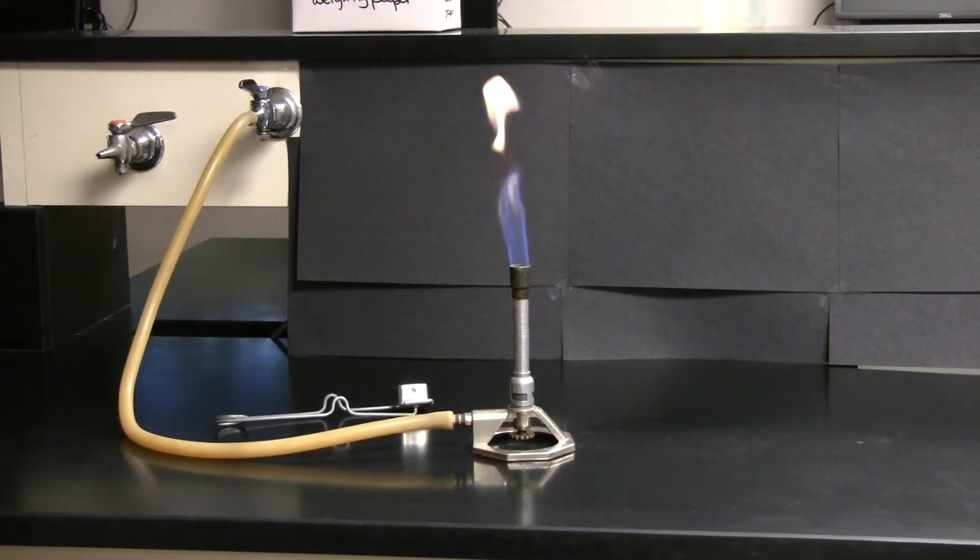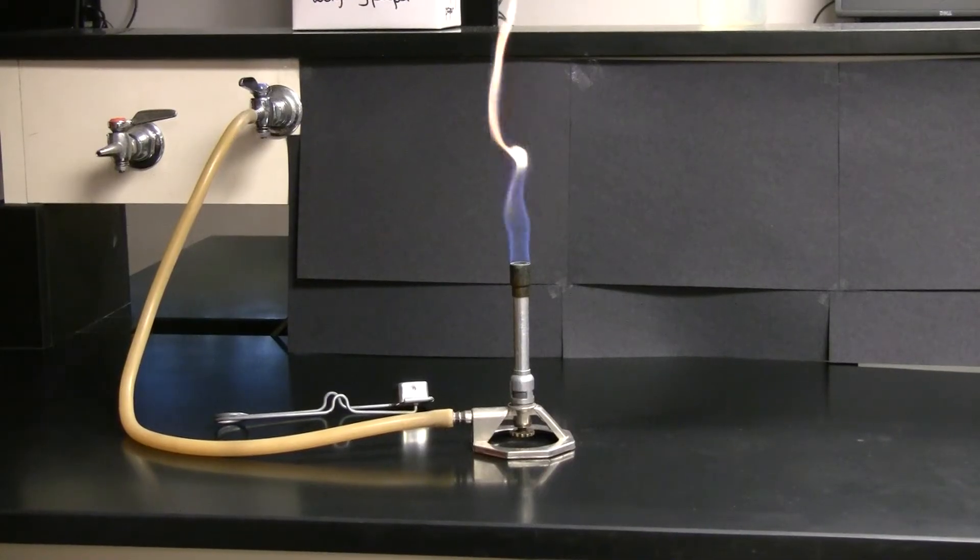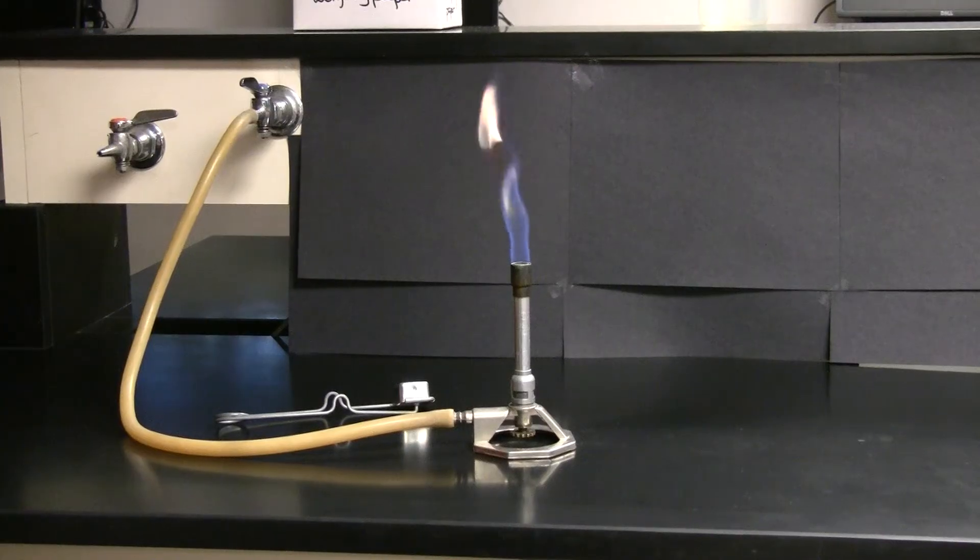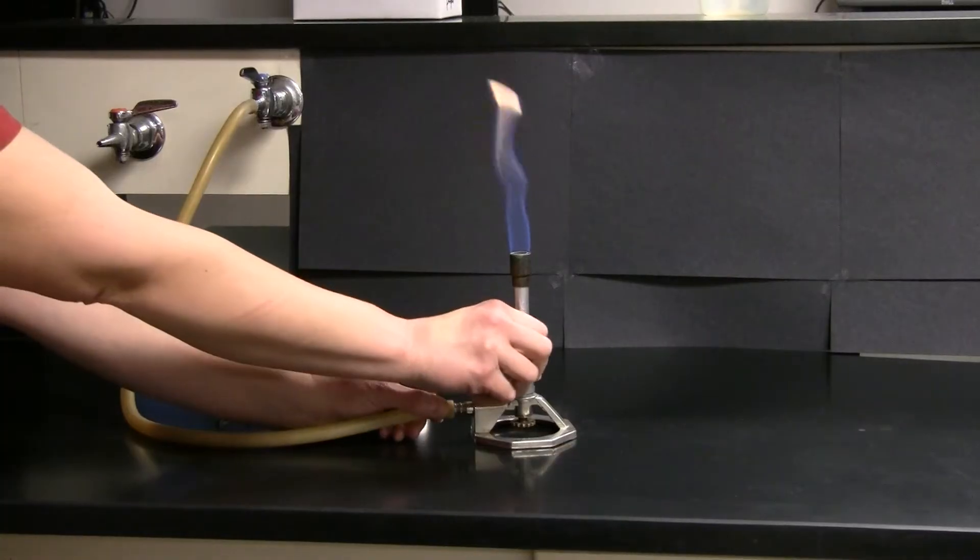We want the flame to be two to five inches in height and it should not be yellow. You should see an outer blue cone and a lighter blue inner cone as well. To make this adjustment, use the air inlet valve on the barrel of the Bunsen burner.